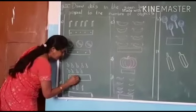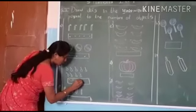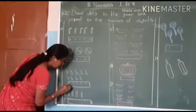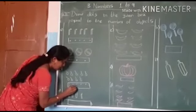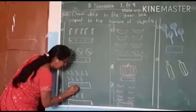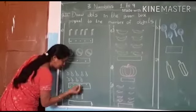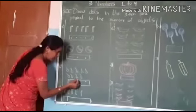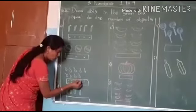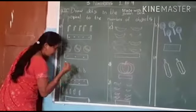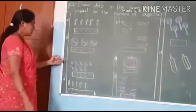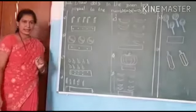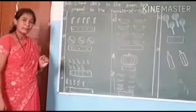One, two, three, four, five, six, seven, eight, nine. See, next one. How many cherries are raised? That many.